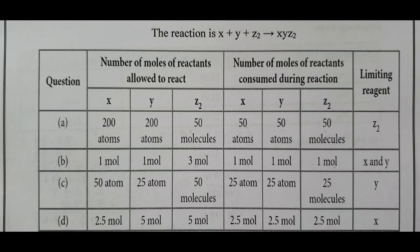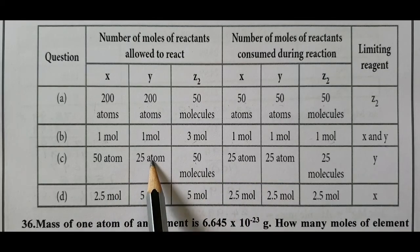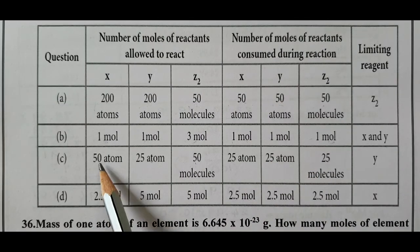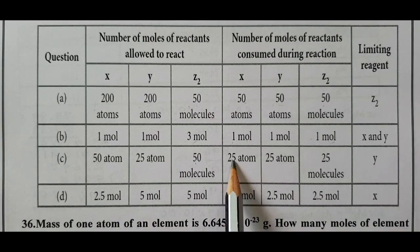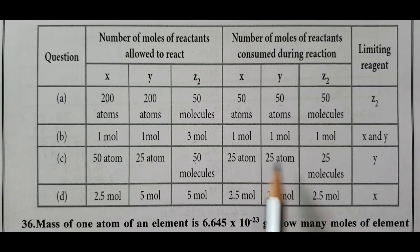Third case: 50 atoms of X, 25 atoms of Y, 50 molecules of Z2. The lowest value is 25 atoms of Y. So 25 of each reactant is consumed: 50 minus 25 equals 25 atoms of X remaining; 25 minus 25 equals 0 for Y. Therefore, Y is the limiting reagent.